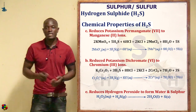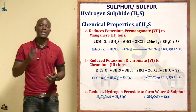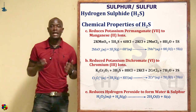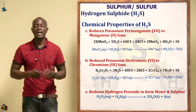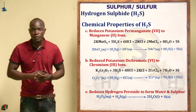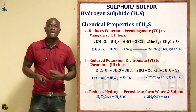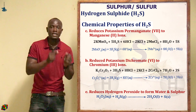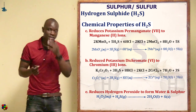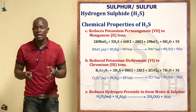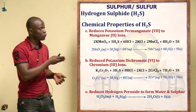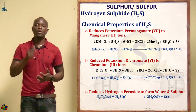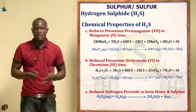Hydrogen sulfide also acts as a reducing agent. It reduces acidified potassium permanganate to a colorless manganese(II) solution. It also reduces acidified potassium dichromate — the orange K₂Cr₂O₇ — to a green chromium(III) solution, meaning chromium(VI) is reduced to chromium(III).